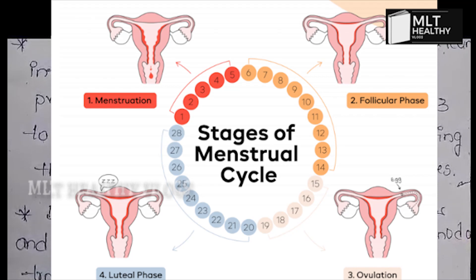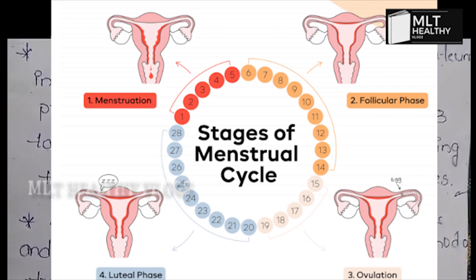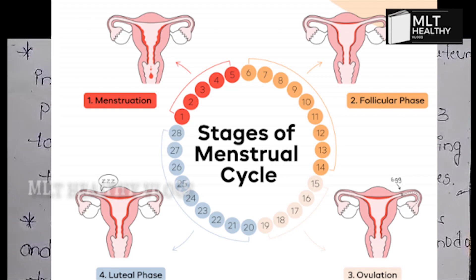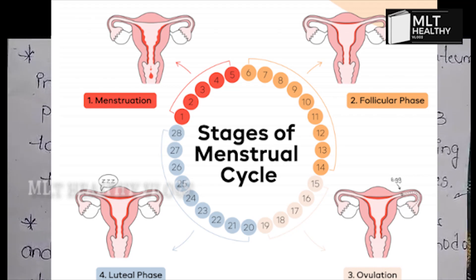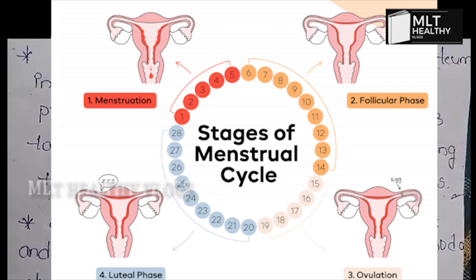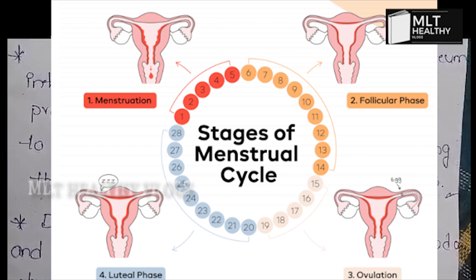In summary, the menstrual cycle has three phases: the menstrual phase, the proliferative phase, and the secretory phase. Thank you.